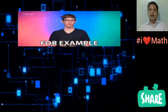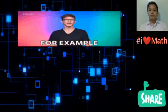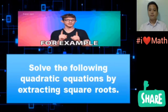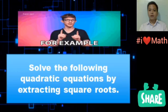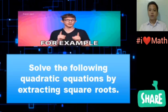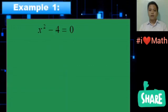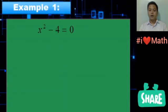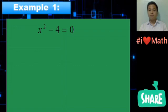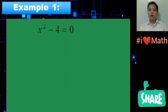Let us cite an example. Solve the following quadratic equations by extracting square roots. For example 1, we have x² - 4 = 0. As you can see, the bx term is equal to 0, so we can use the extracting square root method.